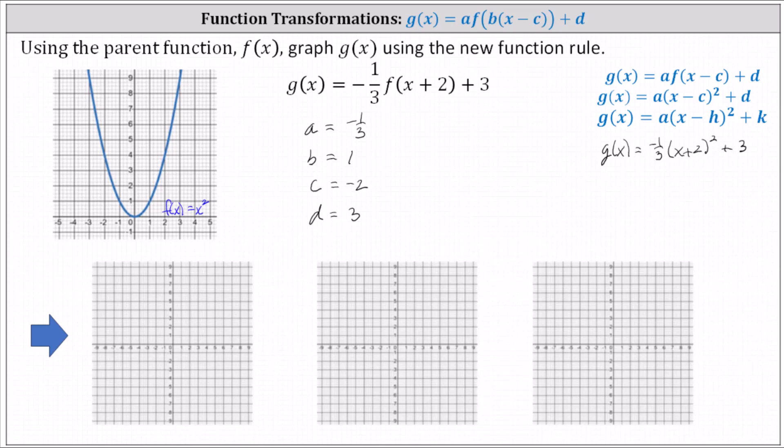To perform the transformation on f of x, let's find three key points. Let's use the vertex, zero comma zero. And then because of the a value of negative one-third, let's select two points where the y value is a multiple of three. Let's use three comma nine and negative three comma nine.